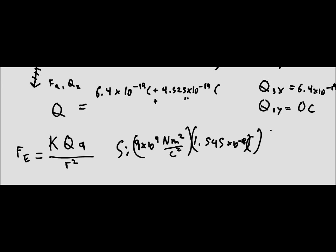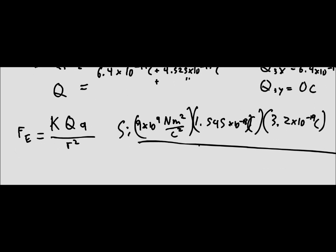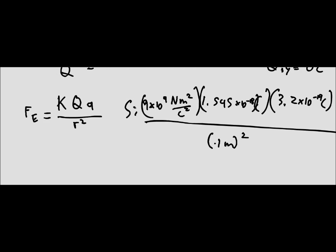And then we've also got the small q, which is 3.2 times 10 to the negative 19 coulombs over the radius, which is 0.1 meters, and that's squared. So when all that's said and done, the answer you should come out with is 4.45 times 10 to the negative 25 newtons.